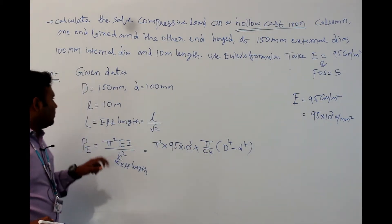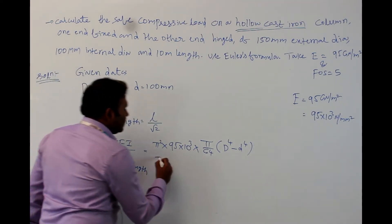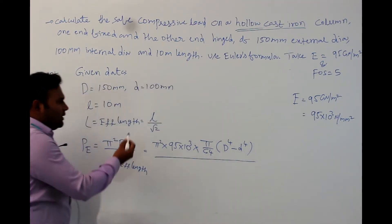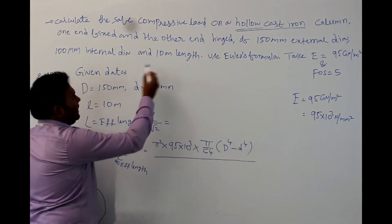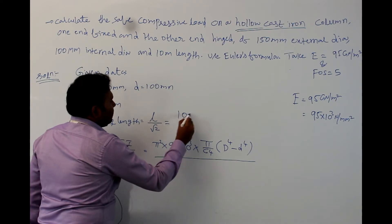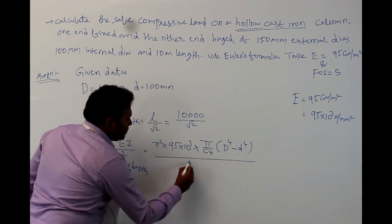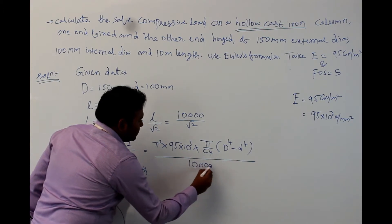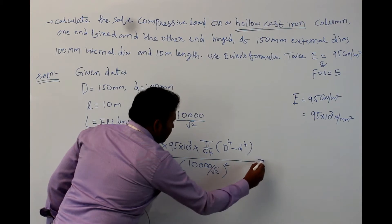Capital D value is already known to us, 150 mm. Small d value is also known to us, it is 100 mm. Therefore, substitute the values divided by effective length, which is already known to us, L by root 2. Actual length is given as 10 meters. Therefore, 10,000 mm by root 2 whole square.